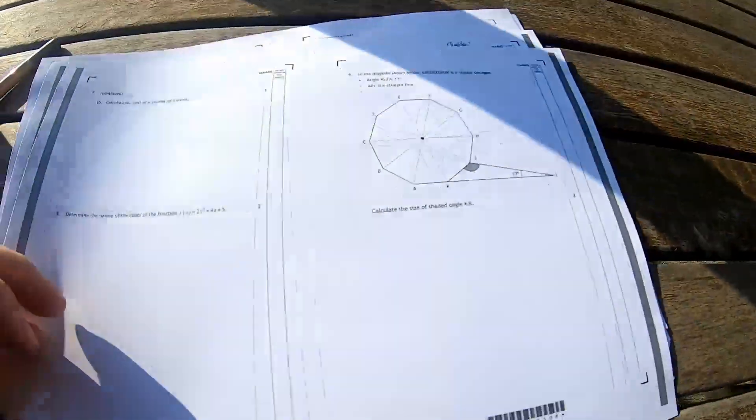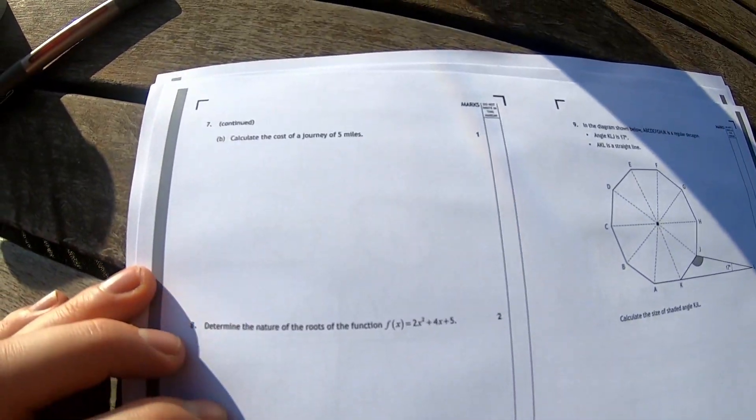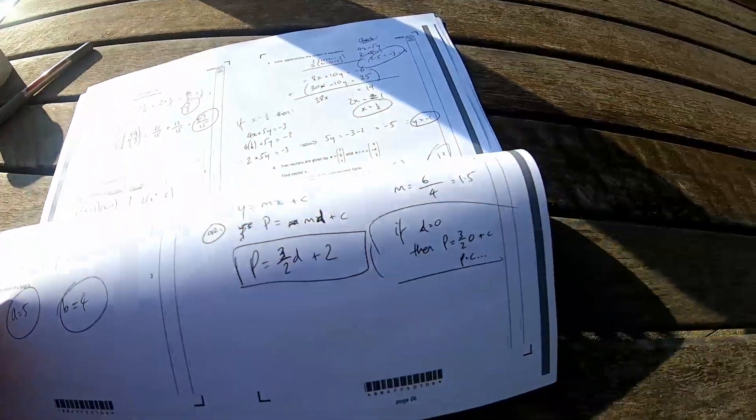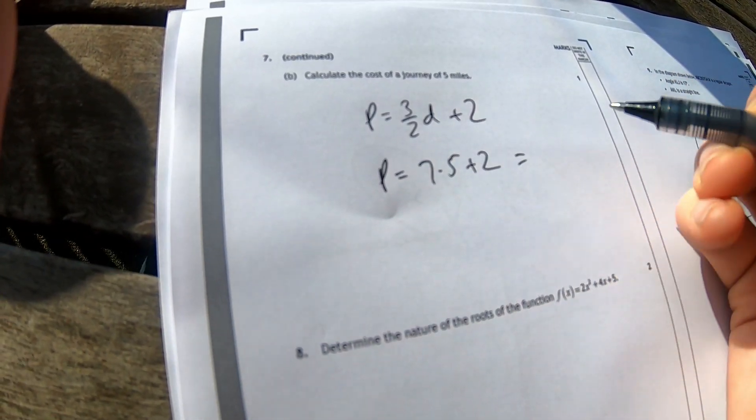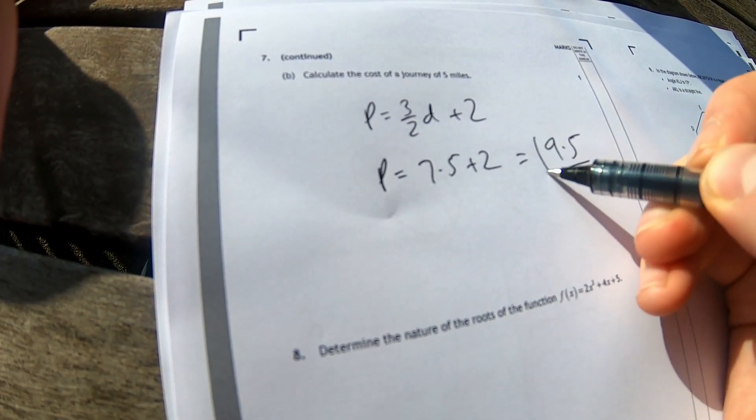Calculate the cost of a journey in five miles. Well p equals three on two d plus two. 7.5 plus two is equal to 9.5 pounds.